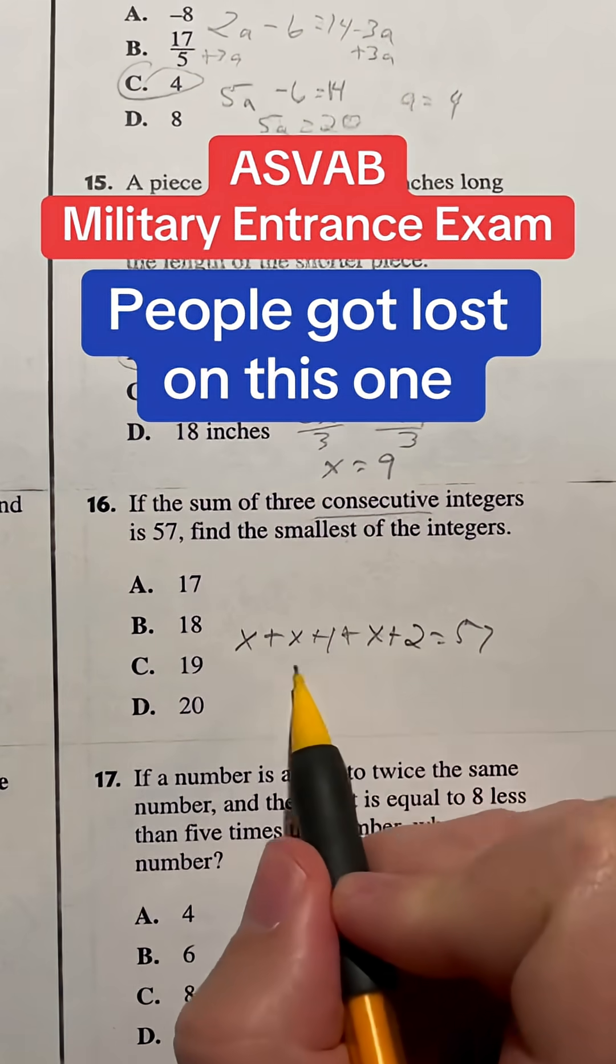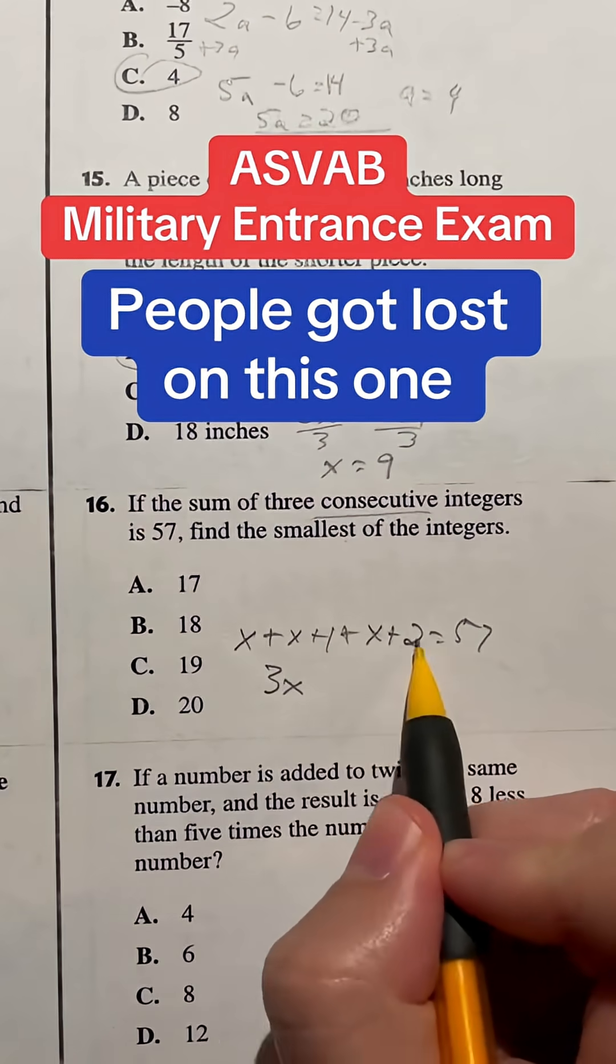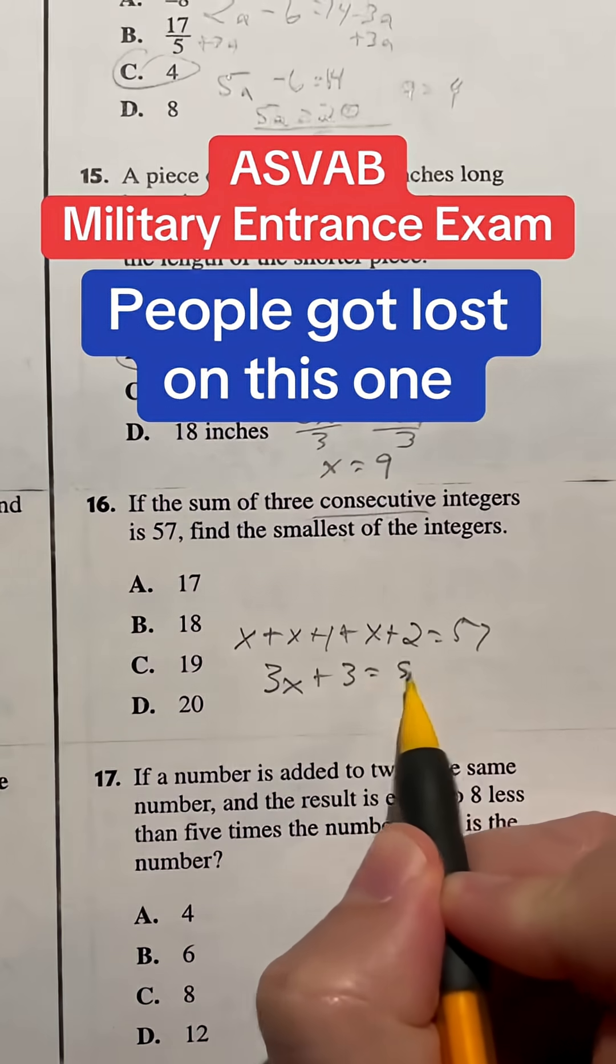Let's combine like terms. I have x plus x plus x, which will give me 3x. And then I have 1 plus 2, which is going to give me 3, and that's going to be equal to that 57.